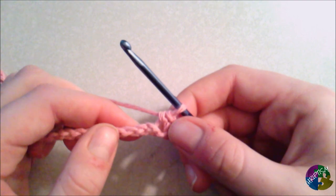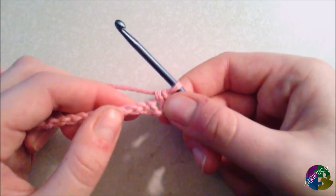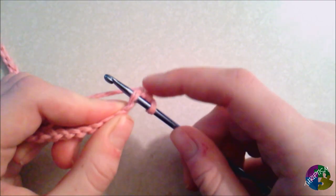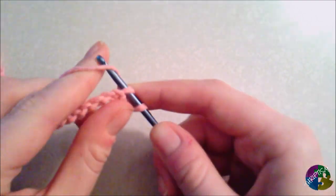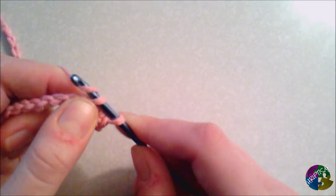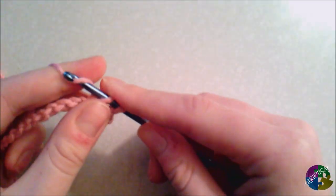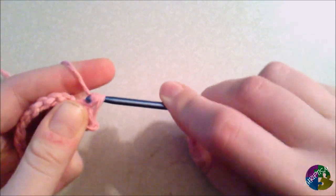So we'll continue doing that in each one of these stitches, so it'll give you plenty of practice. So we'll go ahead and go into the next stitch here, so we have two loops on there. Yarn over and pull through.